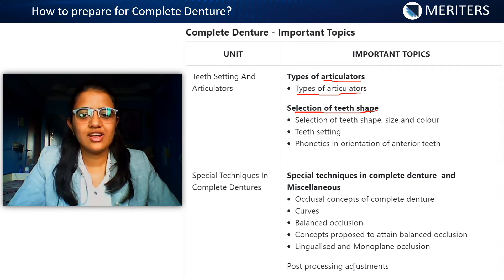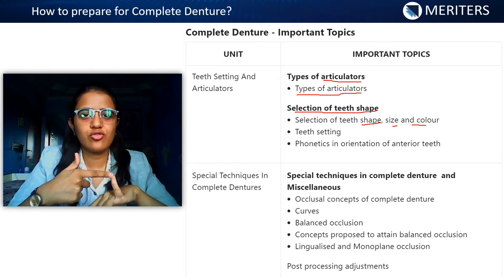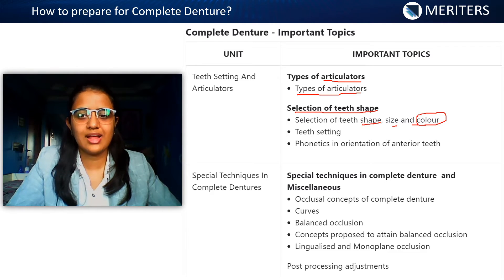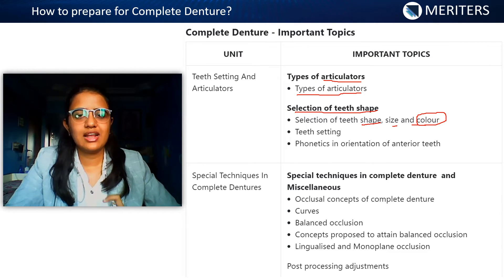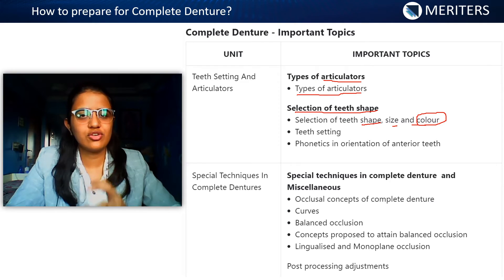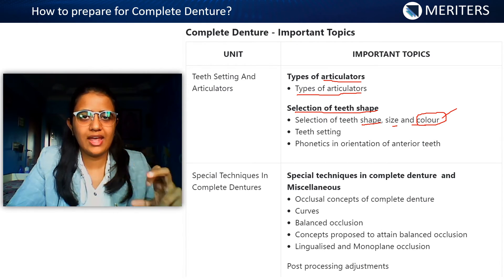Next is selection of teeth, done according to shape, size, and color. This involves the dentogenic concept, the appearance, profile, and color choice of the patient. Color also depends on age and sex. The size and shape of the tooth depend on gender — that's where your SPA factor comes in. Teeth selection also involves buccolingual dimension and labioincisal dimension. You need to know the Vita shade guides and other shade guides, including what A, B, C, and D represent.